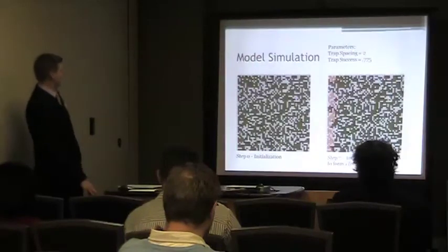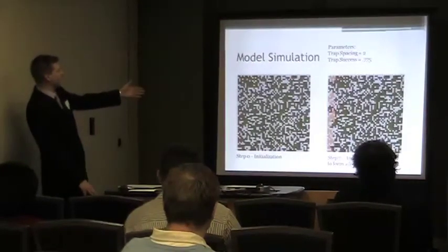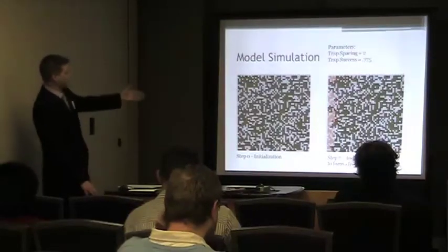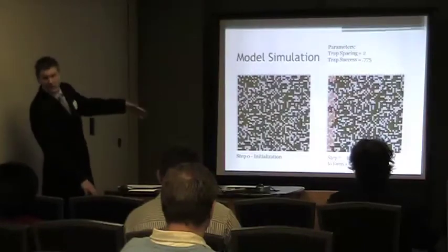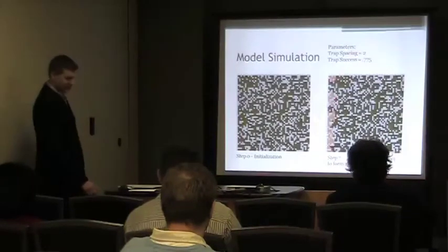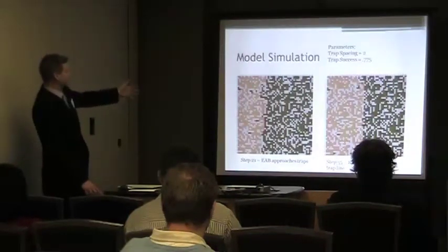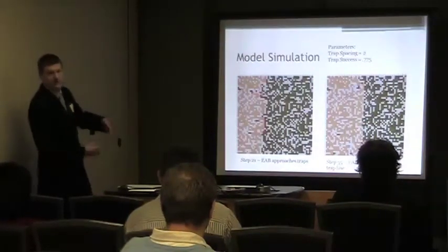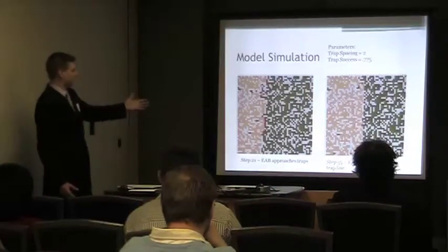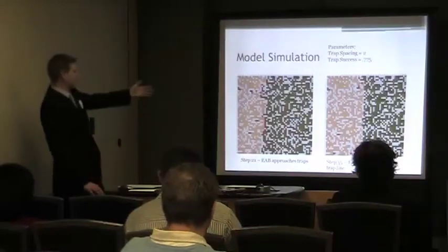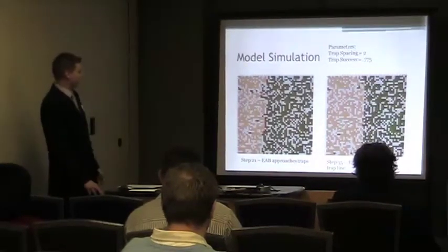Here's what the model looked like in the end. I initialize the traps, then the population moves across the landscape. Green cells are ash trees, red ones are the insects, and the orangish-tan ones are destroyed cells the insect has passed through. As the insect moves across the landscape, it will eventually hit the line of traps, and based on the variable distances between traps, it may or may not break through that line. This is an ideal scenario where traps were placed optimally and the insect did not break through.